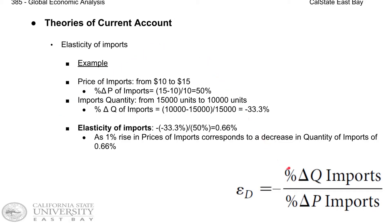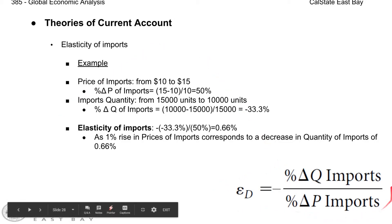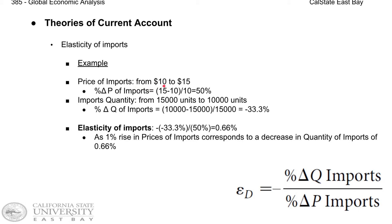We can apply the same logic and define elasticity of demand for imports. Let's say the United States is buying or importing umbrellas made in China. Umbrellas used to sell for $10, and China is able to sell 15,000 umbrellas to American consumers. Now, China decides they're going to make umbrellas $5 more expensive, so it costs $15 each.